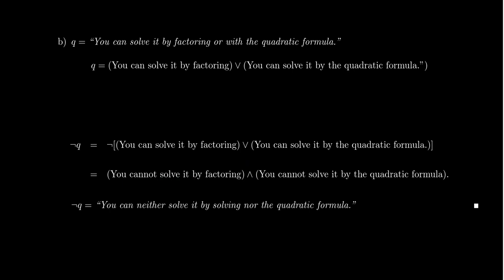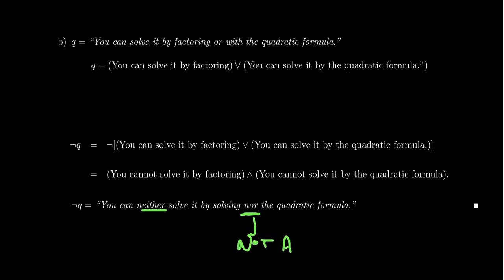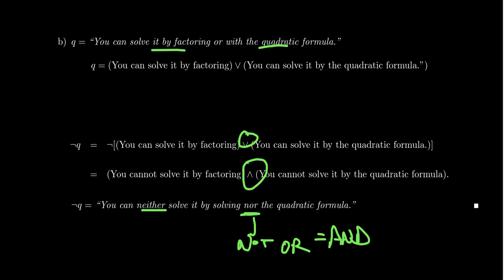In more standard English you would say: 'you can neither solve it by factoring nor by the quadratic formula.' In English, 'nor' means 'not or,' but as we're discussing, 'not or' actually means 'and.' Our English language has this logical principle already built into it. If I tell you 'you can solve it using one method or the other' and that's a false statement, that means neither method can be used to solve the equation.